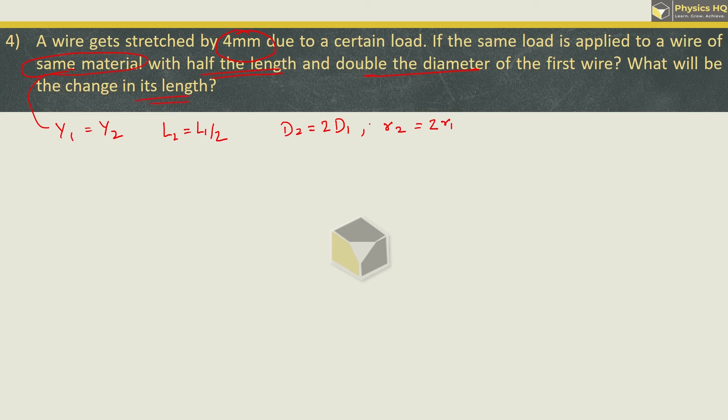What will be the change in its length? So for the first wire, change in length is already given, delta L1 which is 4 mm. We have to find out the change in second wire's length. Now Young's modulus formula is f into L upon area which is pi r square into small l the elongation. Now since Y1 is equal to Y2, we can write f into L1 upon pi r1 square into small l1. This is equal to f L2 upon pi r2 square into l2.